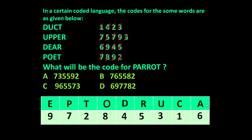We have now determined the code for each and every letter. The code for 'parrot' will be 765582 — because code for P is 7, code for A is 6, code for R is 5, double R is double 5, code for O is 8, and code for T is 2. Similarly, you can find the code for any given word using the coded language.